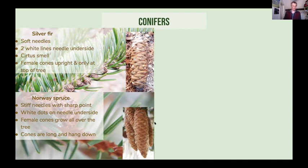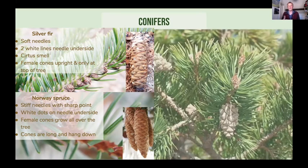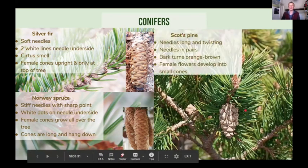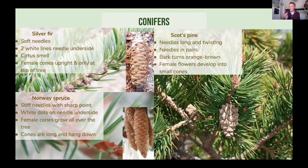Scots pine has pairs of needles — a useful rule of thumb: pines in pairs, spruces single. The cones hang down and are not very big on Scots pine, and the needles twist. They're not always in pairs in all pines, but it's a really good rule of thumb for identification.